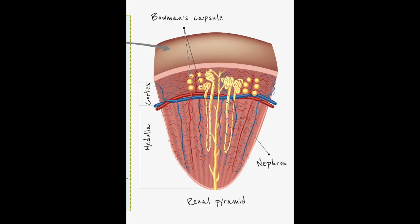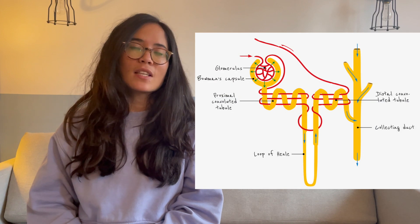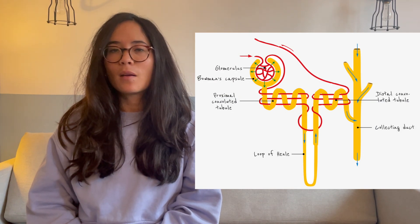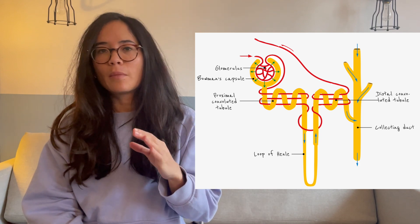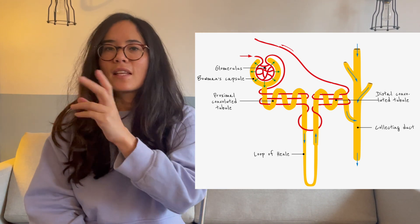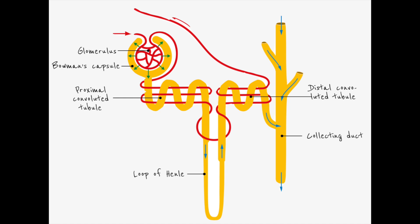Now we need to focus on the medulla, the middle section of the kidney. The medulla is full of thousands of tiny structures called the nephron. There's a capillary entering the nephron known as the glomerulus, which exists within the Bowman's capsule — the starting point of the nephron. The vessel coming into the glomerulus is wider than the one leaving, and that generates pressure which forces small molecules out of the glomerulus into the Bowman's capsule. This process is known as ultrafiltration.